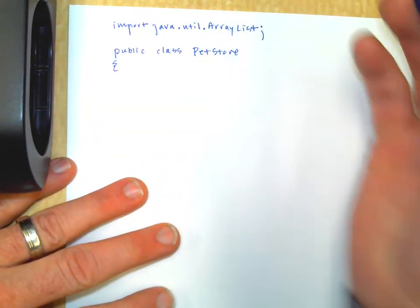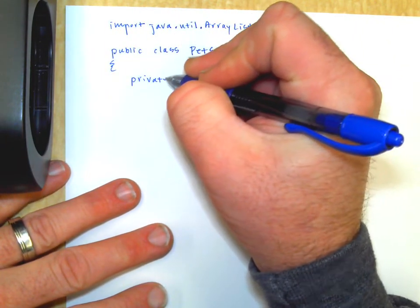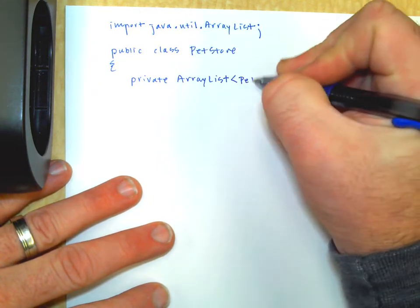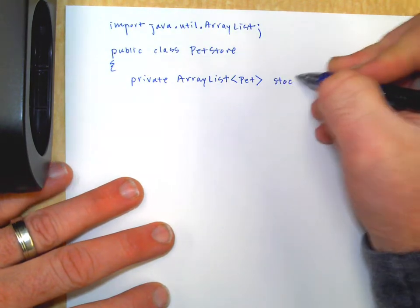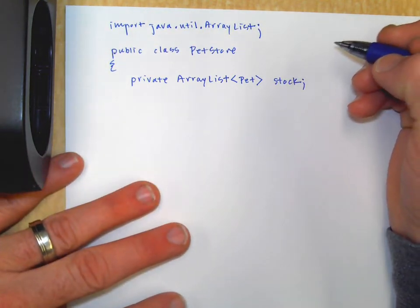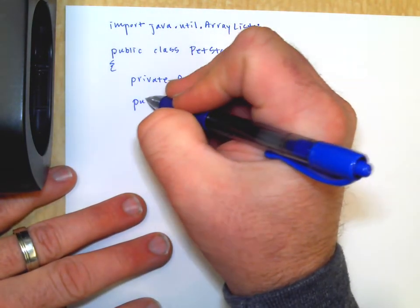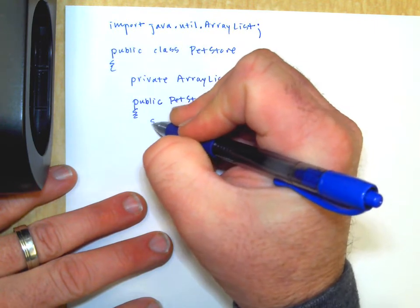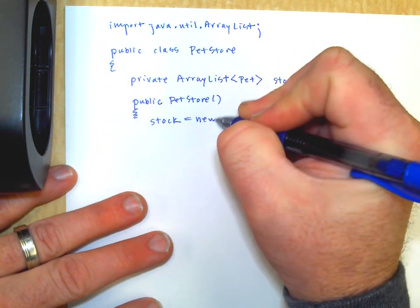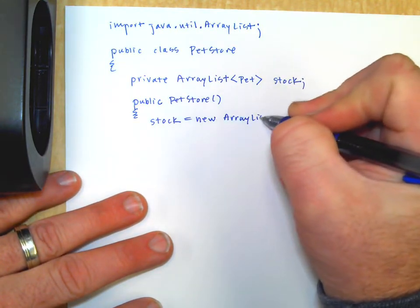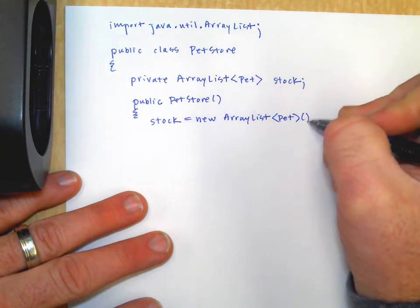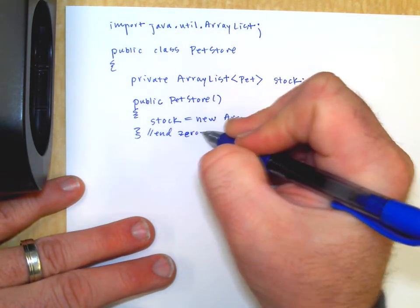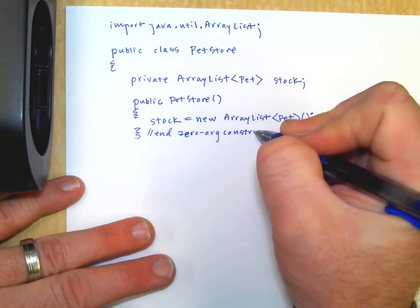So a lot of times in the class composition that we have, the sort of the class that holds the other class will have like an array list or array that holds those objects. So we could say, well, let's make it an array and call it stock. What's in stock in the store. Now we just declare it here. We don't initialize it. So then we're going to do constructors. We could make a zero arg constructor and it could be like stock equals and we can just initialize it. New array list that holds pet objects. Let me do the empty parentheses afterwards. End zero arg constructor. We also call that a default constructor.